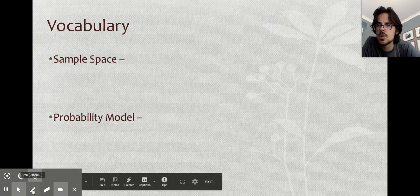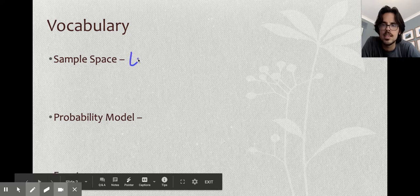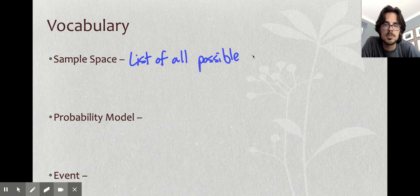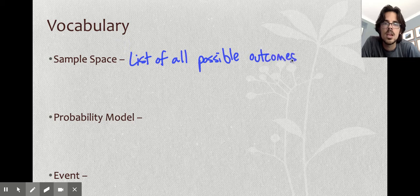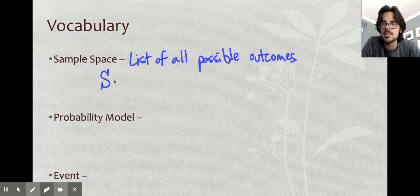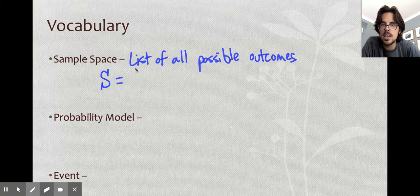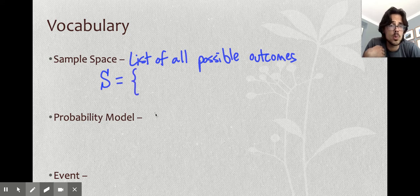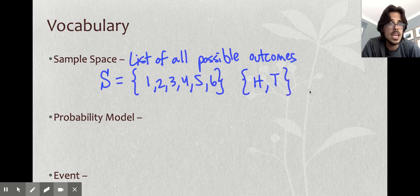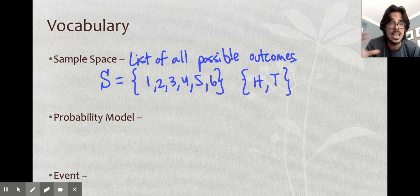First, a vocab term you probably heard from me in Algebra 2. The sample space is the list of all possible outcomes. The variable we use for the sample space is a capital S. When you're making a list, you do squiggly brackets. If I was going to roll a die, the numbers one through six would be my only possibilities. If I was going to flip a coin, my sample space would be heads and tails. The sample space is just everything that can happen.